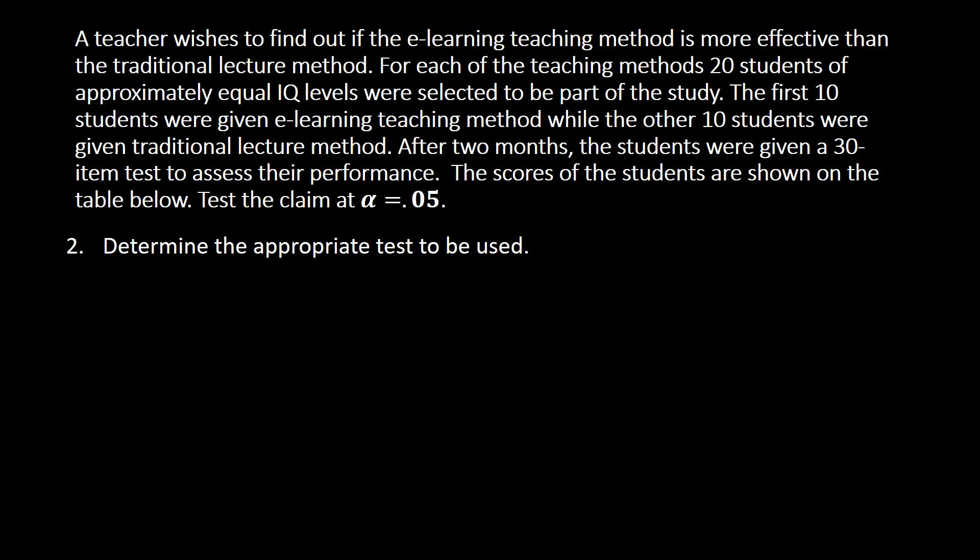In step two, we determine the appropriate test. Since we have two independent samples — 10 students receiving e-learning and 10 receiving traditional lecture — we choose the independent t-test. Under the independent t-test, there are two types: one assuming equal variances and one assuming unequal variances.